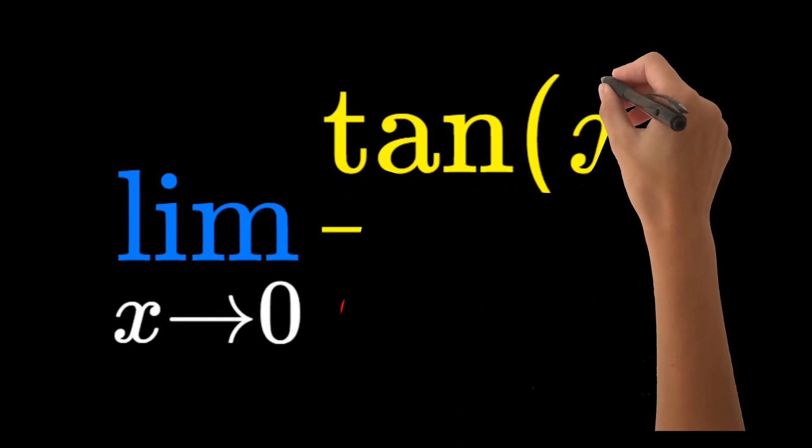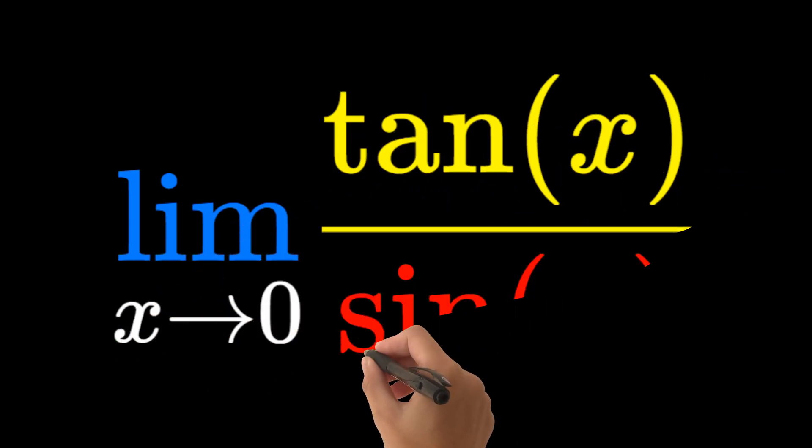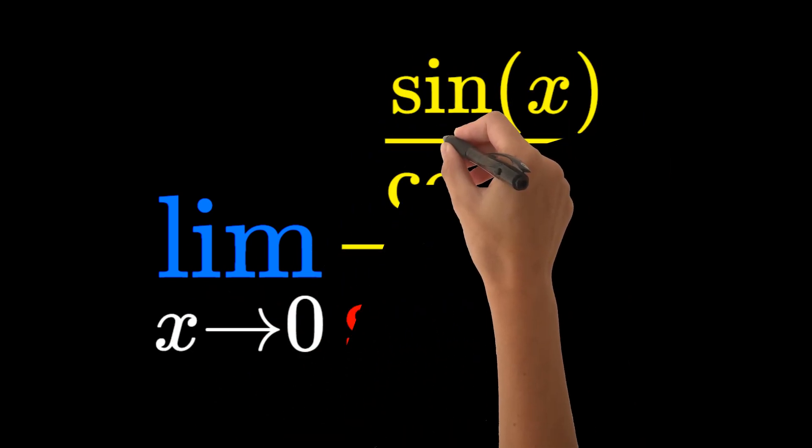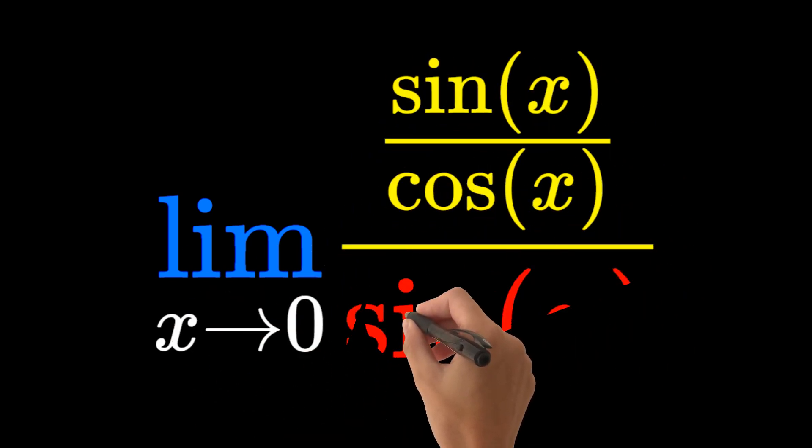Let's find the limit as x goes to 0 of tangent of x over sine of x. We get the limit as x goes to 0 of sine of x over cosine of x divided by sine of x.